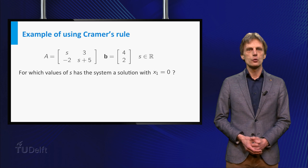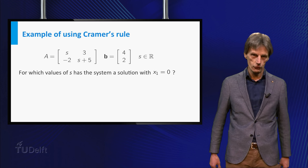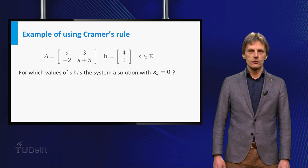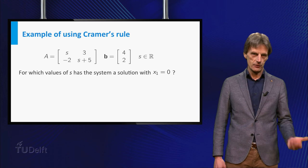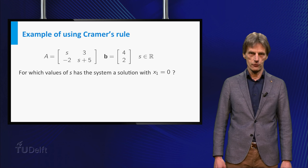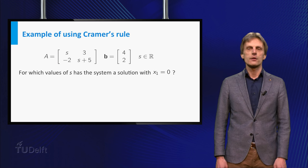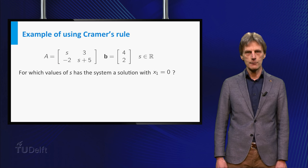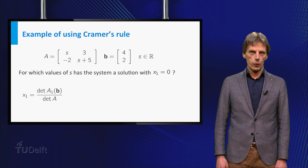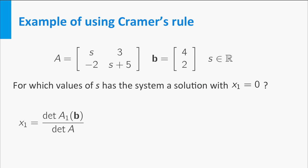To solve this problem you could of course go through the usual motions of row reduction, but in this case the matrix A contains a parameter s and this makes the method of row reduction somewhat elaborate. Instead, let's try the formula for x1 from Cramer's rule. x1 is equal to the determinant of A1(b) divided by the determinant of A.